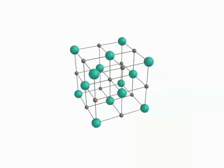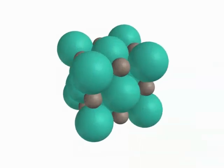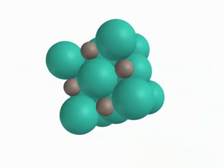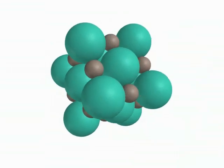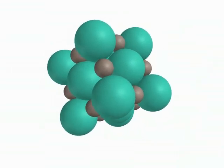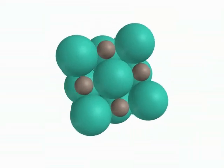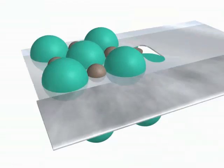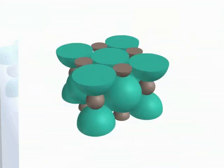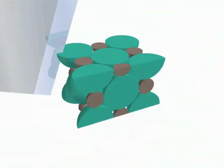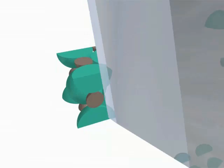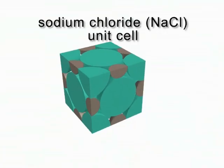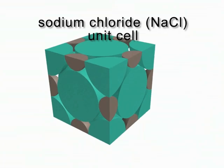Sodium chloride adopts the sodium chloride, or rock salt, structure, as do many other alkali halides, alkaline earth oxides and sulfides, and other ionic compounds. Picture separate face-centered cubic arrays of chloride ions and sodium ions as they approach and interpenetrate each other. The smaller sodium ions fit in the holes between the larger chloride ions in the NaCl unit cell.